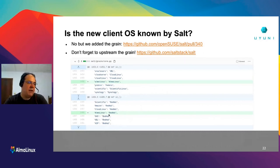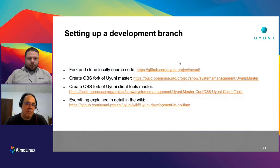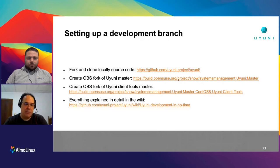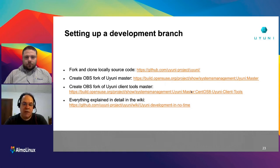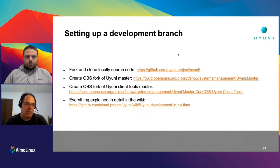You need to set up a development branch — fork and clone the source code of Uyuni. Then create a fork in OBS to actually build the packages, so when you write code you can build those packages, deploy them, and make sure everything is correct including database migrations. If you're adding a new client OS, you need to fork some client tools or start from scratch — but I'd advise selecting one of the already supported client tools as a starting point. There's a wiki page explaining how to set all of this up in full detail.